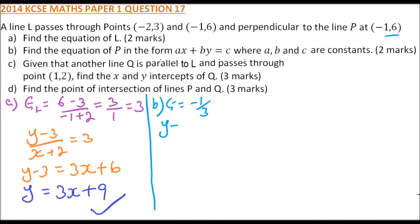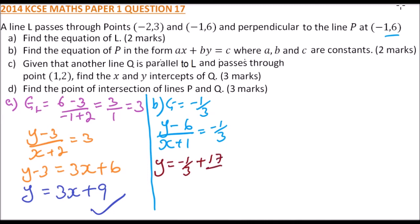We say (y − 6) divided by (x − (−1)) equals −1/3. Cross multiply and simplify: y = −(1/3)x + 17/3. Multiply through by 3 to get 3y = −x + 17. Rearranging, the equation of p is x + 3y = 17.